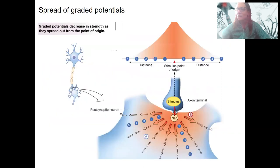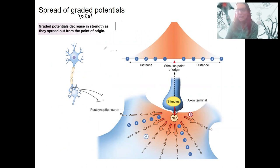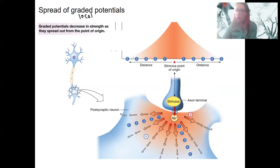Finishing up with graded potentials. Remember that they are local or graded, so they are going to spread only as far as the stimulus intensity. They are going to decrease in strength depending on how far they travel. So that means if they are far from the axon hillock, they are not going to generate an action potential. A stimulus opens gated ion channels.